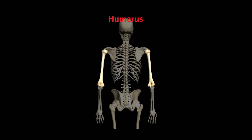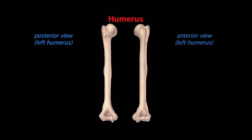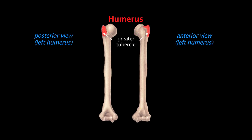The humerus is the bone that makes up the designated arm section of the upper limb. The head of the humerus is the portion that articulates with the scapula in the glenoid fossa, and at the base of the head is the anatomical neck. Just distal to the anatomical neck you'll find two prominent bumps: the larger one is called the greater tubercle and is located on the lateral surface, while the smaller one is called the lesser tubercle, located on the anterior surface. Between these two tubercles is the intertubercular groove.